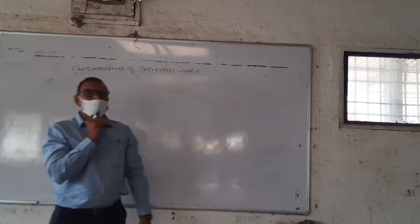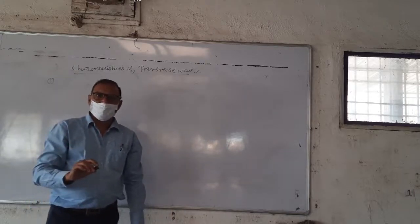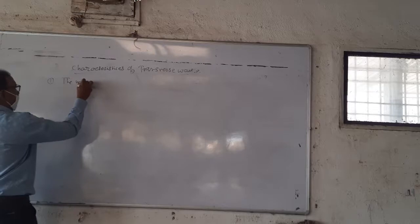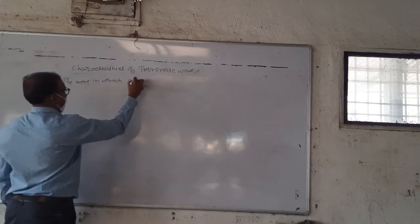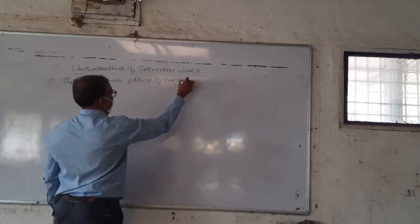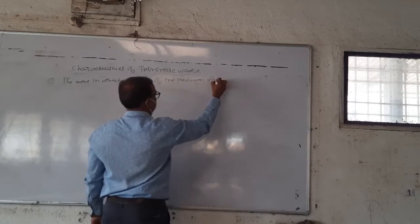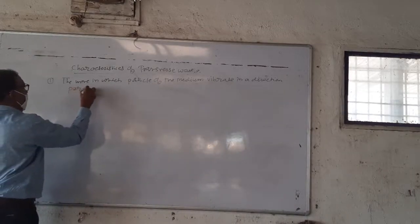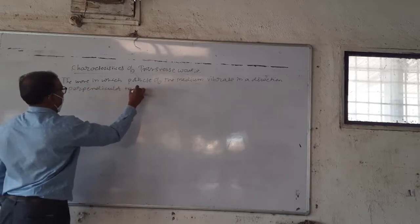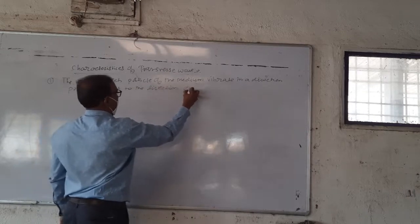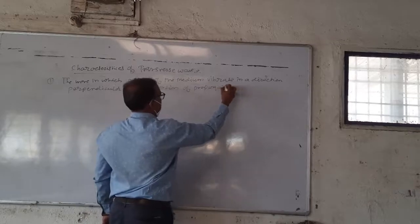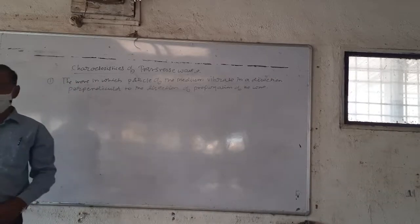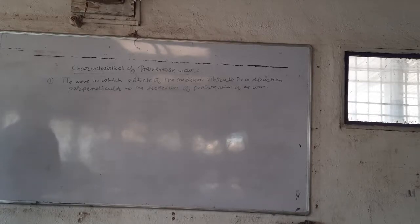First characteristic is the definition. A transverse wave is one in which the particles of the medium vibrate in a direction perpendicular to the direction of propagation of the wave.